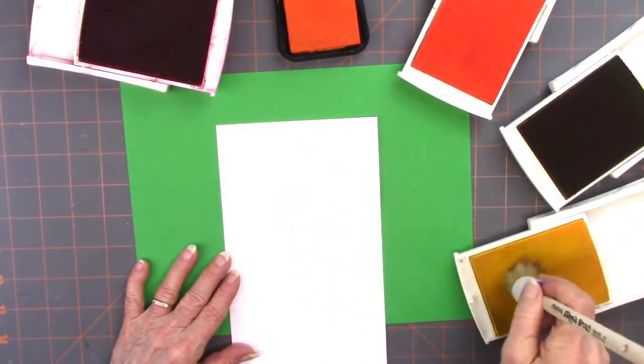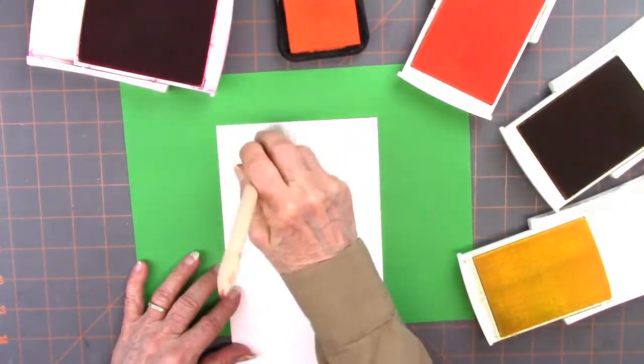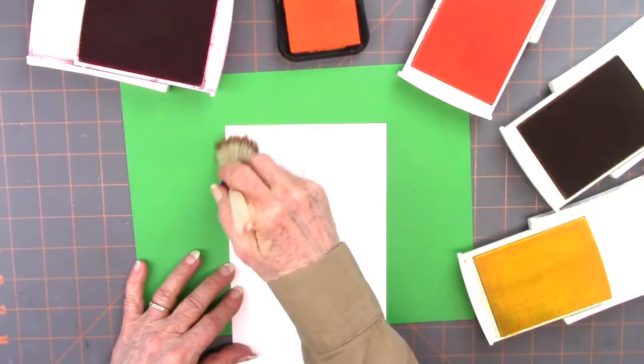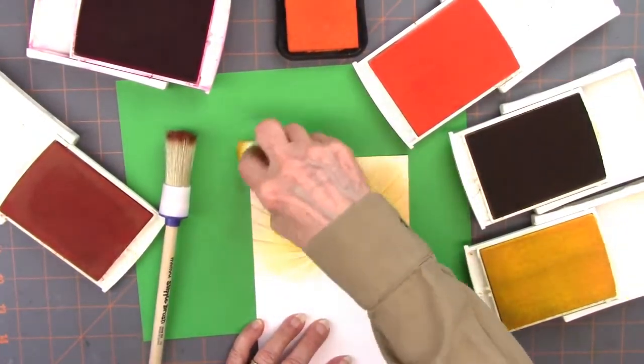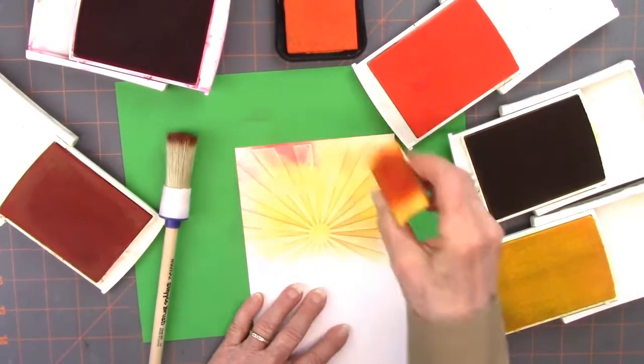ink pads that are yellows and golds and orange all the way up to red. And I'm really, really fast forwarding through this. And then I got my makeup sponge to darken it up a little bit. Pulled out even another ink pad that had a different shade. This was Marigold or something.